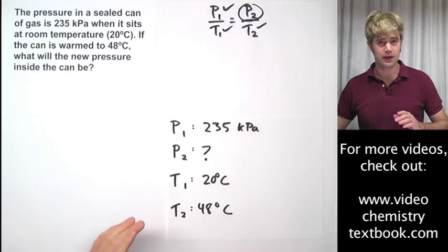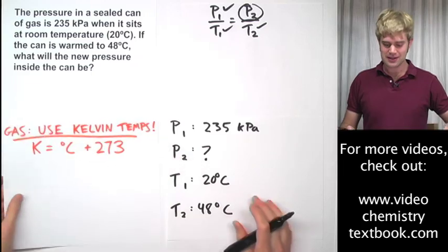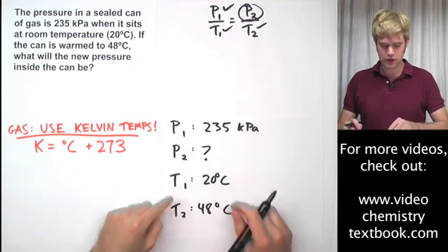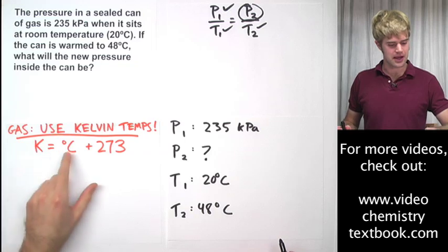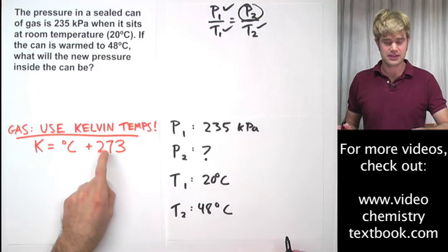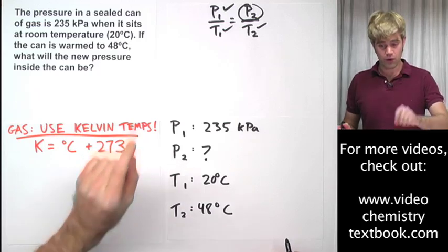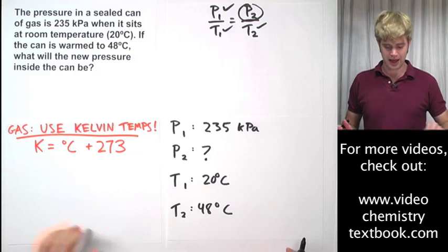Now, you may be thinking, you may remember this. Whenever we use gases, we need to convert these temperatures into Kelvin temperatures. And we do that here by taking the Celsius temperature, 20 or 48, and adding 273 to it. So now, before we plug anything in, let's get these Celsius temperatures into Kelvin.